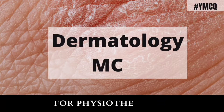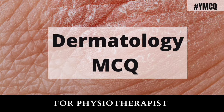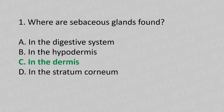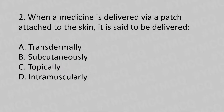Hello, welcome to the dermatology or integumentary system MCQ series. Question 1: Where are the sebaceous glands found? Option A: in the digestive system. Option B: in the hypodermis. Option C: in the dermis. Option D: in the stratum corneum. The answer is Option C: in the dermis.